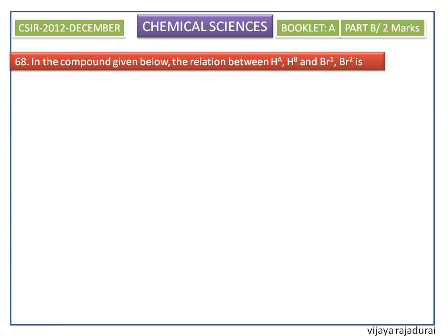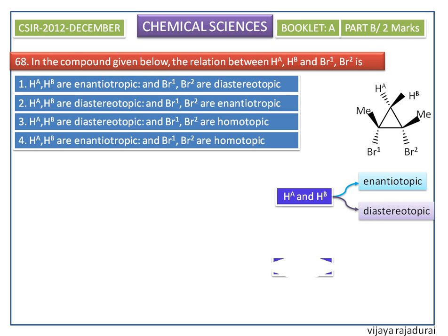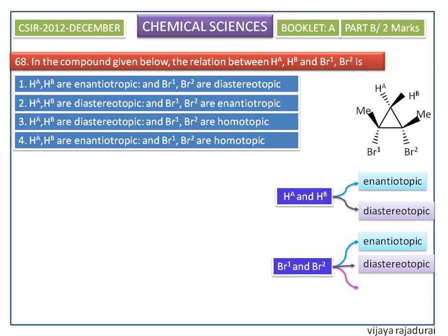In the compound given below, the relation between HA, HB, BR1, and BR2 is asked. The options shown indicate that HA and HB are either enantiotopic or diastereotopic, while BR1 and BR2 may be enantiotopic, diastereotopic, or homotopic.